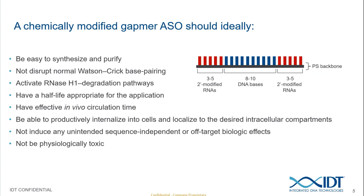An ideal chemically modified gapmer antisense oligo should be easy to synthesize and purify, result in normal Watson-Crick base pairing, and be a substrate for RNaseH1 via the 8 to 10 DNA bases in the central core. It should have a half-life appropriate for the application, effective in vivo circulation time without rapid renal clearance, and be taken up into productive intracellular areas where RNaseH1 is active. It should also not induce unintended off-target effects — whether sequence-dependent or sequence-independent — and should not be toxic.